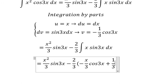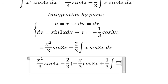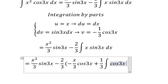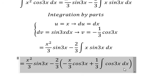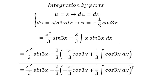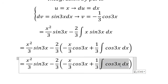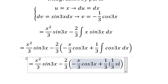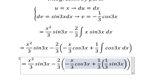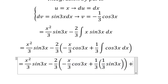1 over 3 and we have the integration cos 3x dx. The integration of this one, we have 1 over 3 sin 3x, and we put C in here.